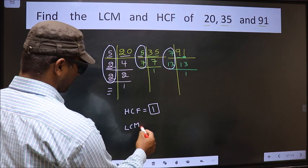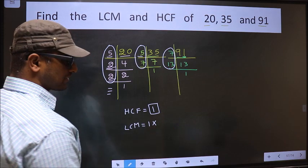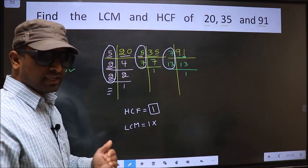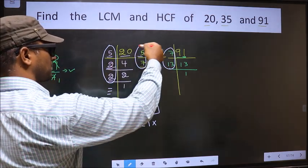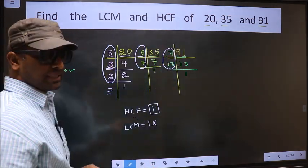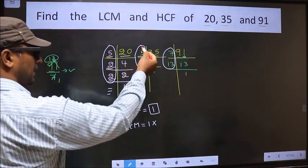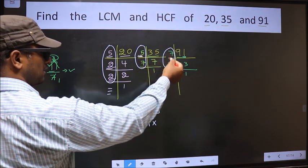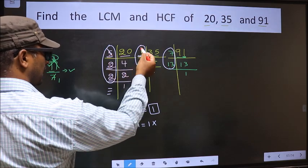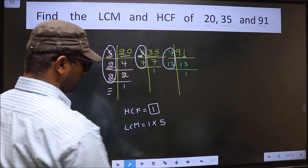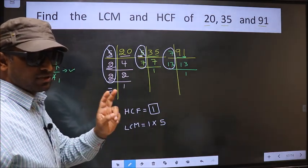Next, now to get LCM. Whatever HCF we got, to that we should multiply by the numbers which appeared either once or twice in these 3 places. What I mean is, over here 5 is not cut. Do we have 5 here? Yes. Next place, do we have 5? No. 5 present in both places, so you cut 5 and write here. To write a number here, it is enough if it is present in one place or in two places.